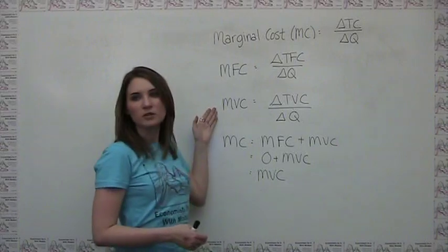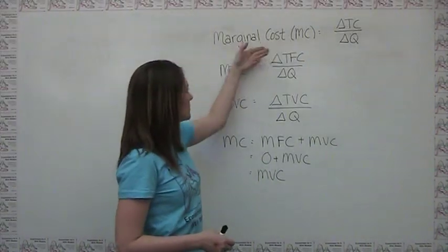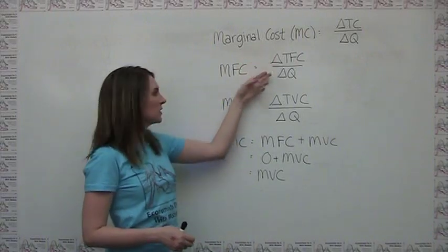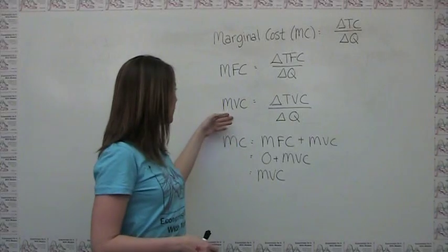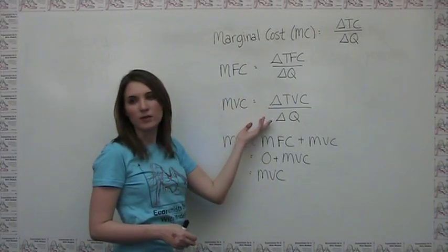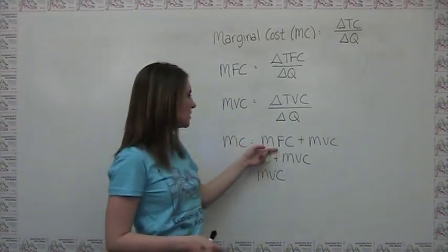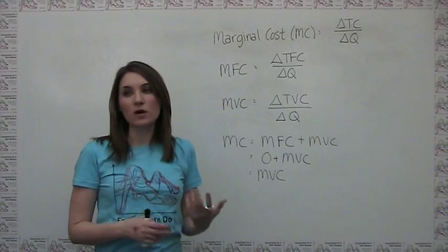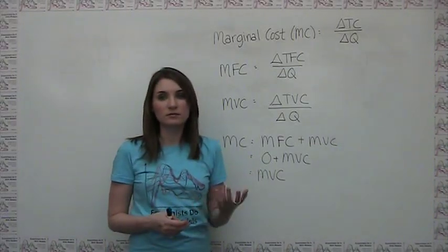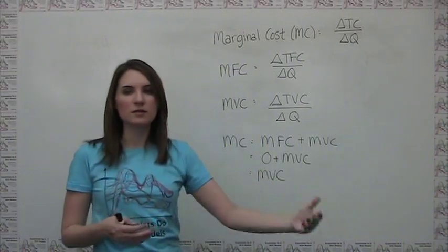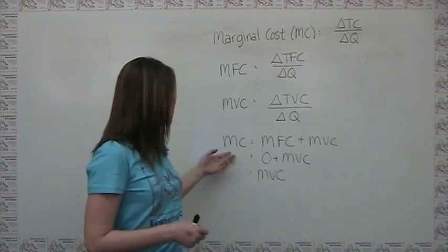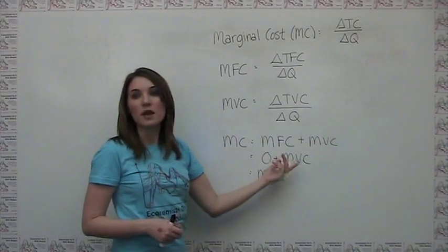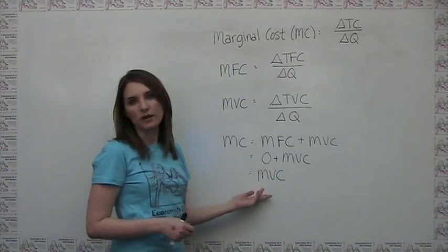We can define marginal fixed cost and marginal variable cost in a similar way to how we defined marginal cost overall. Marginal fixed cost is the change in total fixed cost divided by the change in quantity. It's worth noting that marginal fixed cost will always be zero, because if total fixed cost is fixed, then the change in total fixed cost to make one more unit is by definition zero. Therefore, marginal cost and marginal variable cost are, in fact, the same thing.